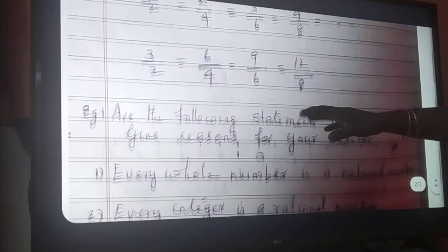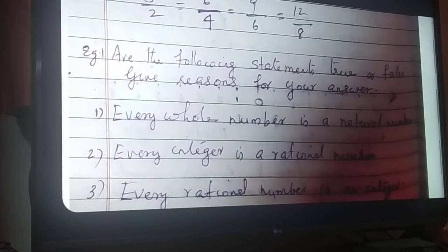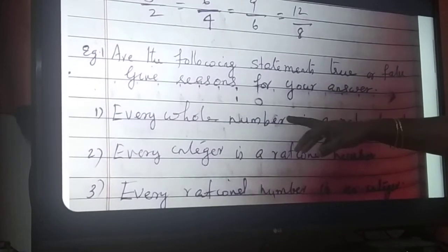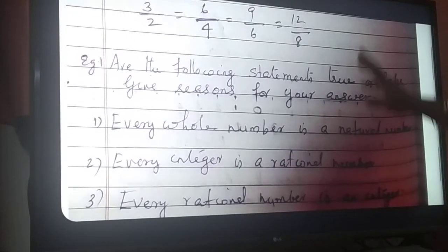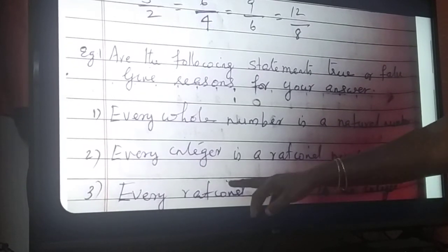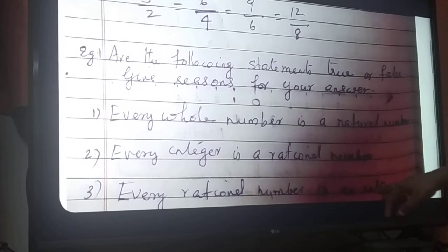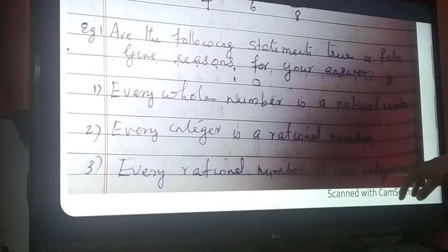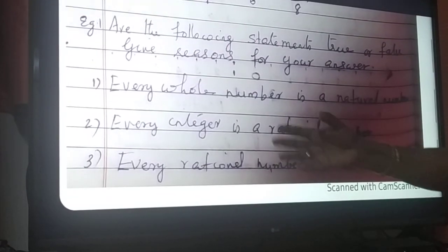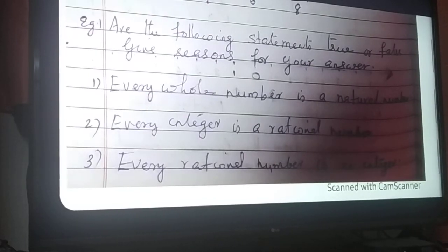Next, I have written one example with questions for you to find the answers yourself, as these are exam questions I have already explained. First: every whole number is a natural number — give a reason. Second: every integer is a rational number. Third: every rational number is an integer. For the third, take a rational number like 6.3 — it is a rational number but not an integer. Therefore, select examples and reach your conclusion. Thank you, bye.